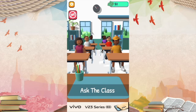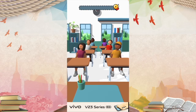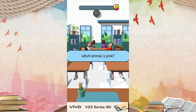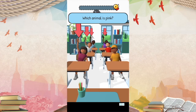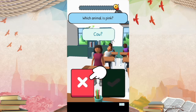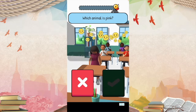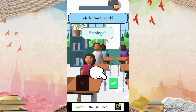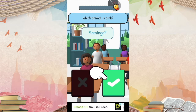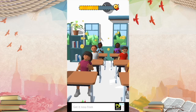Now we're going to do a quick tutorial on Teacher Simulator. We're going to ask the class some questions. Question number one: which animal is pink? How about the girl with the magenta shirt? No, you're wrong. And that boy? Flamingo? Yes, that is correct.